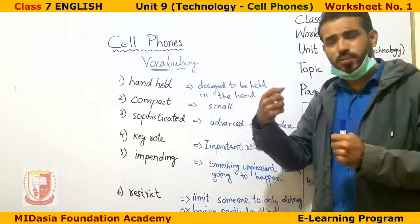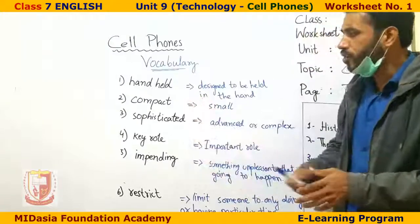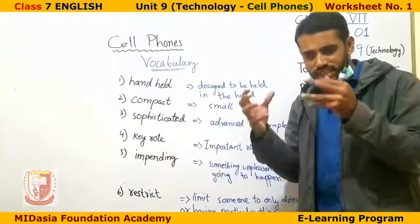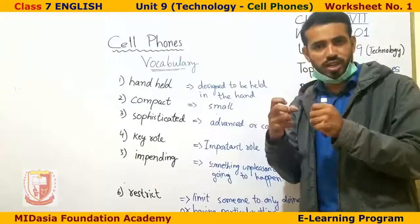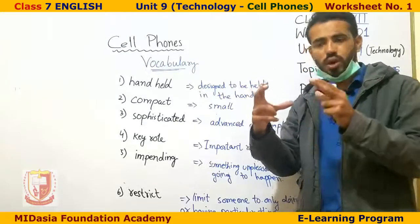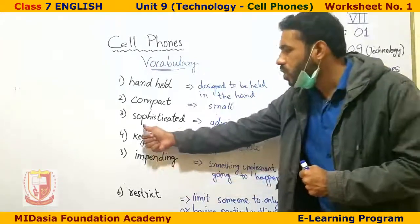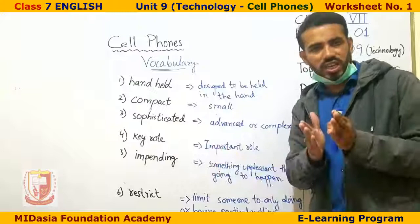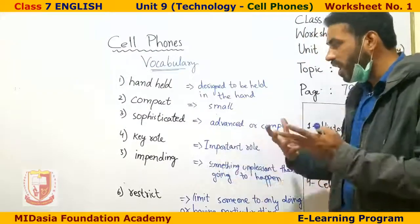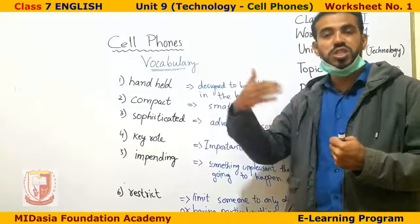The second word is 'compact' and the third word is 'sophisticated.' Sophisticated means advanced or complex. In Urdu, if something is jadeed or advanced, we call it sophisticated.